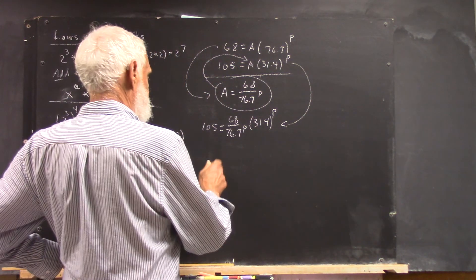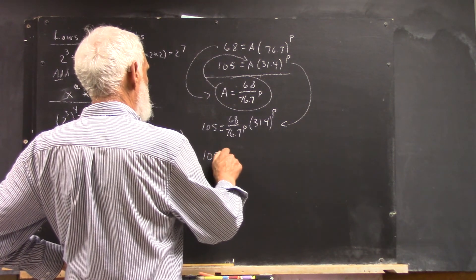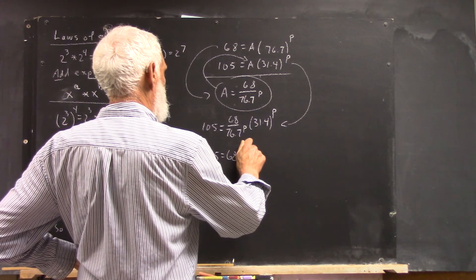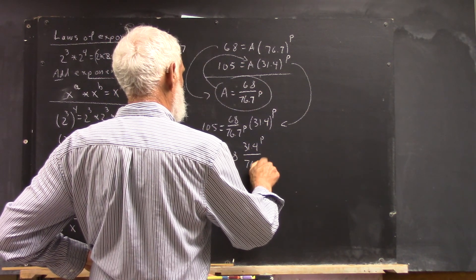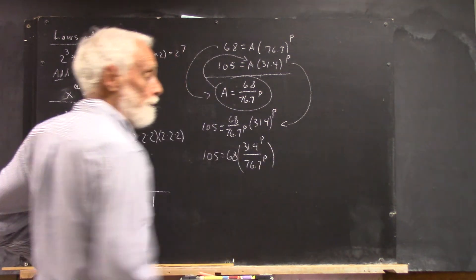Okay, so here we have this. Now, what do we do? I'm going to write this as 105 equals 68 multiplied by 31.4 to the P divided by 76.7 to the P. Okay?